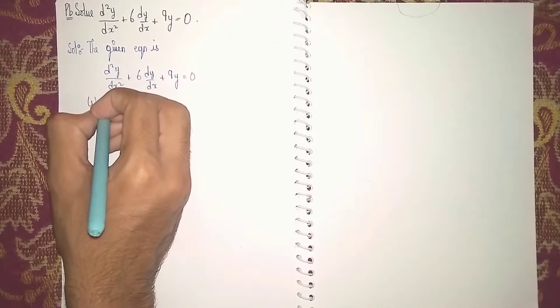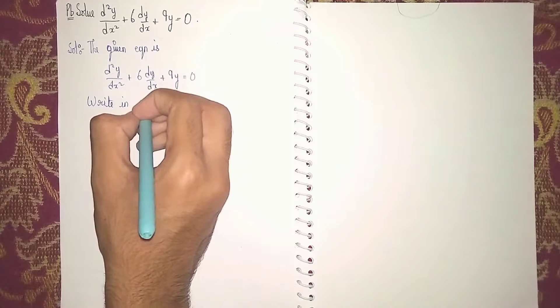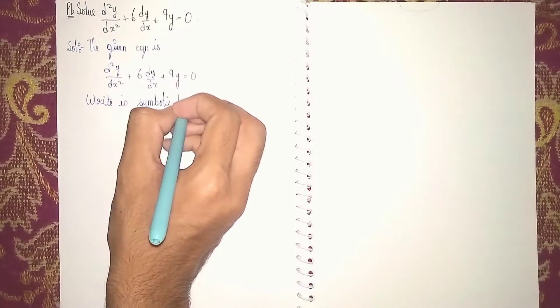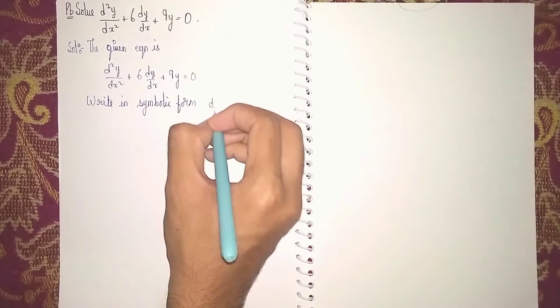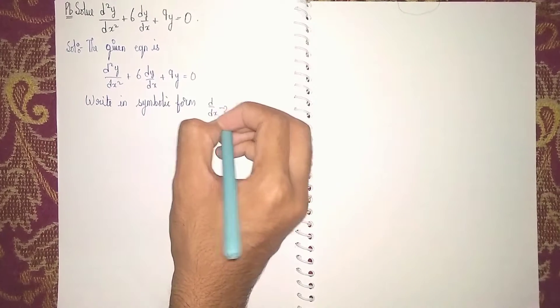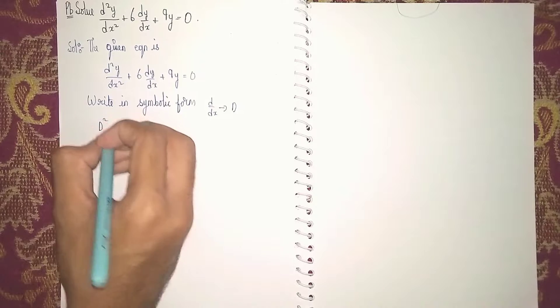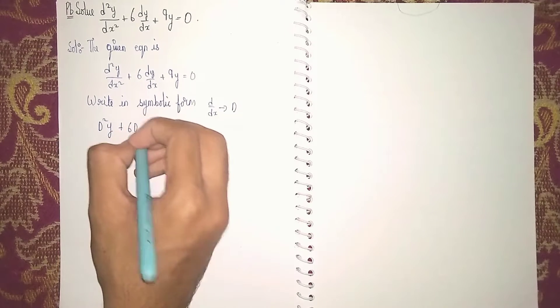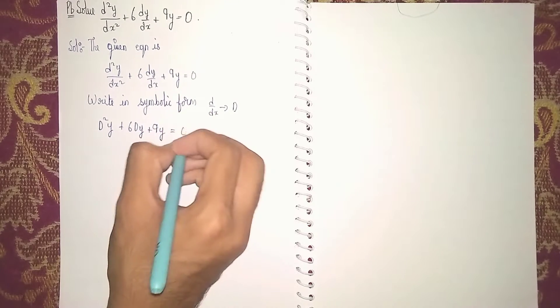Write in symbolic form. Symbolic form means instead of dy/dx, write capital D. So it becomes D²y + 6Dy + 9y = 0.